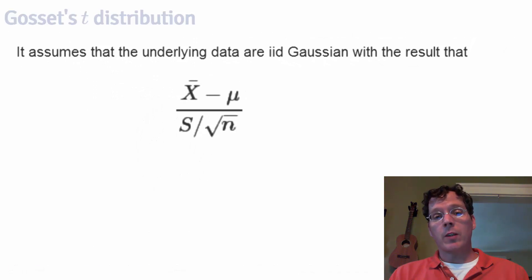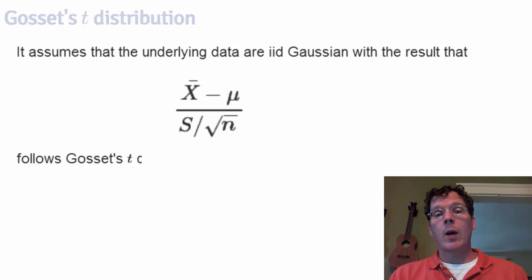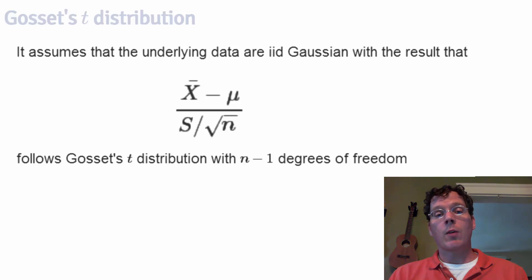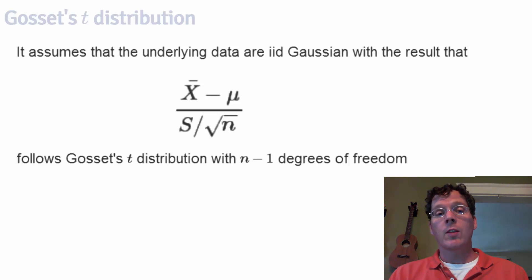The reason for the t-distribution is as follows. If we take x-bar, subtract off the mean, and divide it by the estimated standard error for IID Gaussian data, it is in fact not Gaussian distributed. If we replaced s by sigma, it would be exactly standard normal. However, when we replace sigma by s, it no longer has a distribution as that of a standard normal — instead, it has a t-distribution. As n increases, this distinction is irrelevant. However, for small sample sizes, the difference can be quite large, and if you use a standard normal for small sample sizes, you can get confidence intervals that are too narrow.